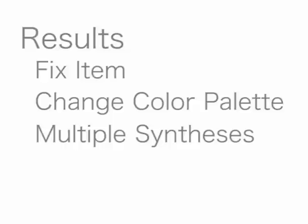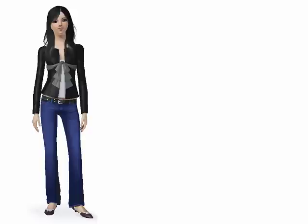Our optimization framework has enabled us to achieve a variety of results. Users can easily control the outfit synthesis, for example by fixing a particular item or modifying the color preference. Furthermore, our system can synthesize multiple outfits. In real-life scenarios, one often wants to fix a particular clothing item and seek suggestions for the remaining items, which our optimization framework can readily handle. In this example, we obtain multiple business casual outfits that include the black sweater.